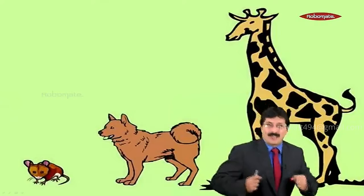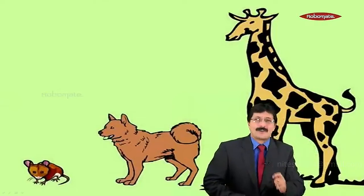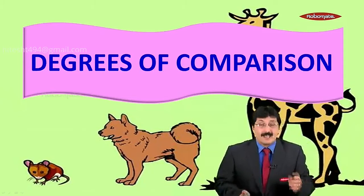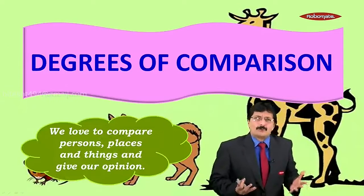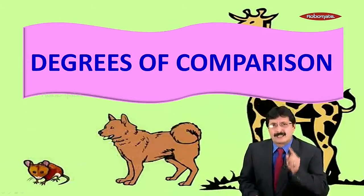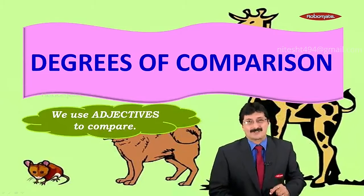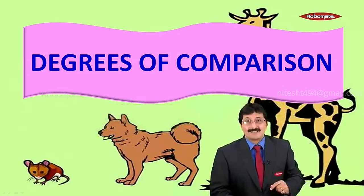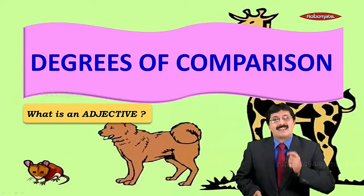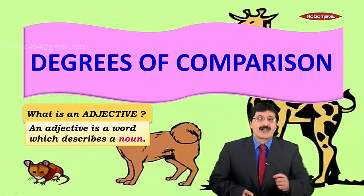Hey friends, once again bringing to you another super exciting topic in grammar: degrees of comparison. Now don't we all love to compare persons, places, animals, things? Which words do we use when we compare them? We use adjectives. So my dear friends, what is an adjective? An adjective is a word that qualifies or describes a noun or a pronoun.